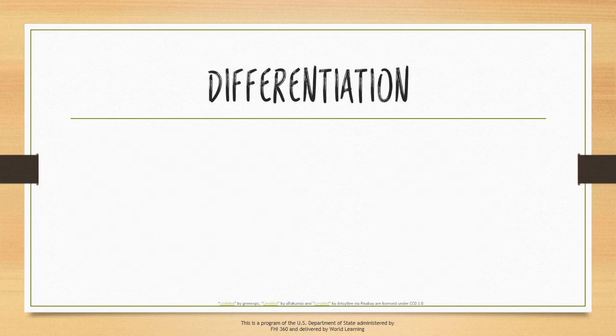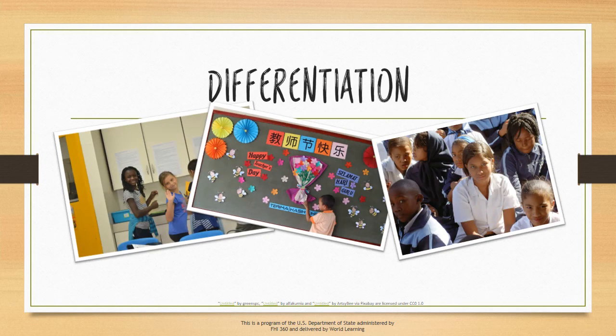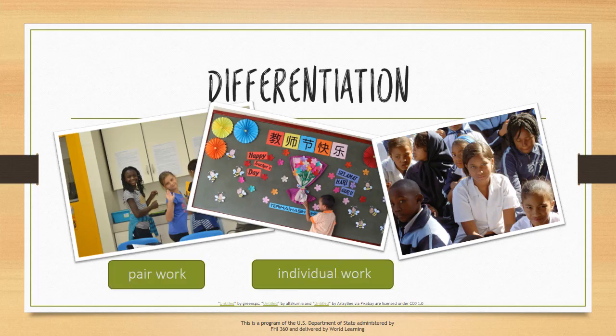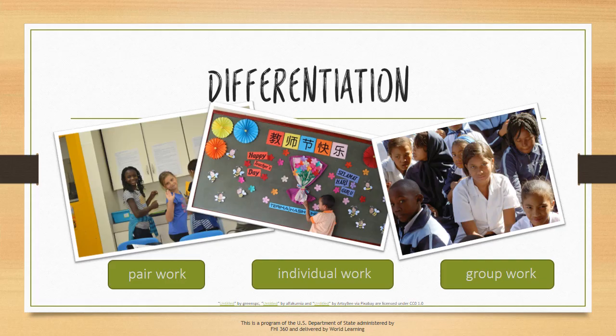You will have a variety of students in your classroom. How will you support students who need extra help and students who need to be challenged more? When writing your lesson plan, make sure to include details about student interaction — for example, will they be doing pair work, individual work, group work, or listening to the teacher? Make sure your lesson includes a balance of interaction, as this can help with differentiation and create a productive learning environment for multiple learning styles.